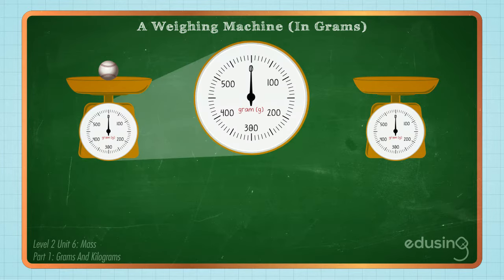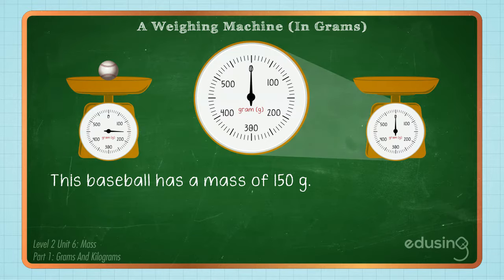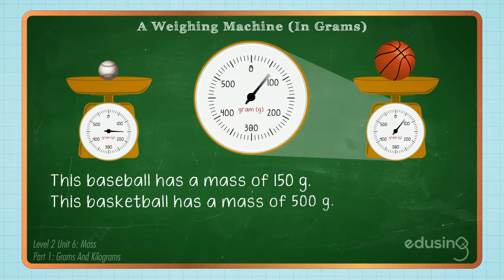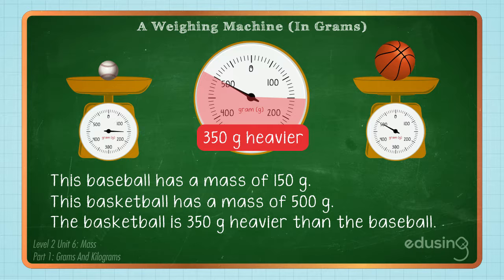This baseball has a mass of 150 grams. This basketball has a mass of 500 grams. We can say that the basketball is 350 grams heavier than the baseball.